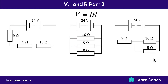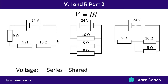Next, let's look at voltage. Voltage is the opposite to current in this sense. In series, the voltage has to be shared out between all of the different components. There's only one way for the current to go around, and voltage is how much energy each part of the current has. Because there's only one pathway, they have to share that energy amongst all of the different components.